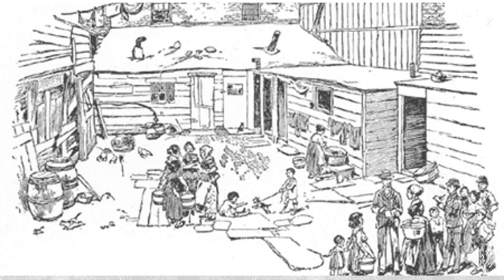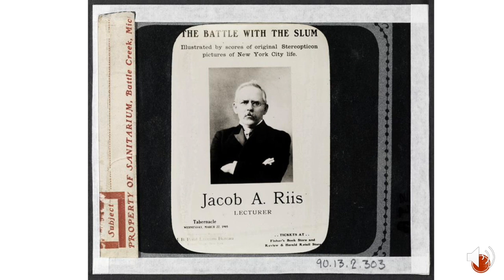At first, Riis attempted to sketch the conditions of the poor, but he was not a competent artist. Eventually, he heard about a new method of photography from Germany that incorporated light from a pistol-type invention. The fired cartridges were filled with antimony sulfide, potassium chlorate, and magnesium to create a small explosive burst of light called a pistol flash. Using this form of flash photography, Riis was able to photograph the horrific overcrowding and unhealthy conditions of cities' immigrants.